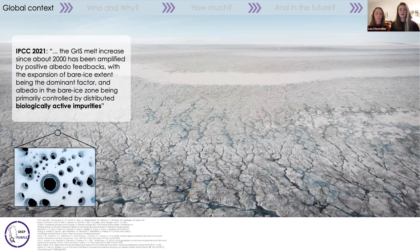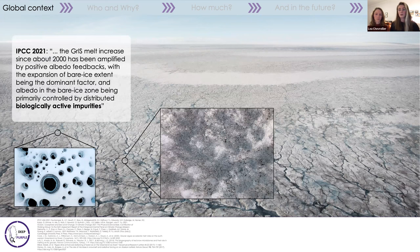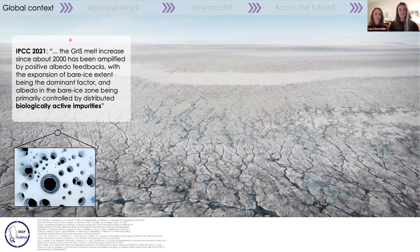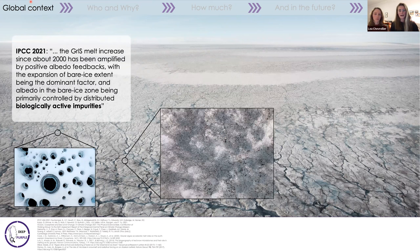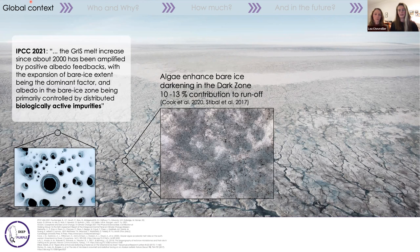This is cited in the last IPCC report, where biologically active impurities are cited as a control on bare ice albedo. Microalgae living on the bare ice are coloring the surface in dark gray, or sometimes deep purple. These algae are found around the world and are particularly abundant in the dark zone of Greenland, where they're thought to be an important control on darkening. At a site in this region, it's been estimated that they contributed 10 to 13% of the surface runoff.